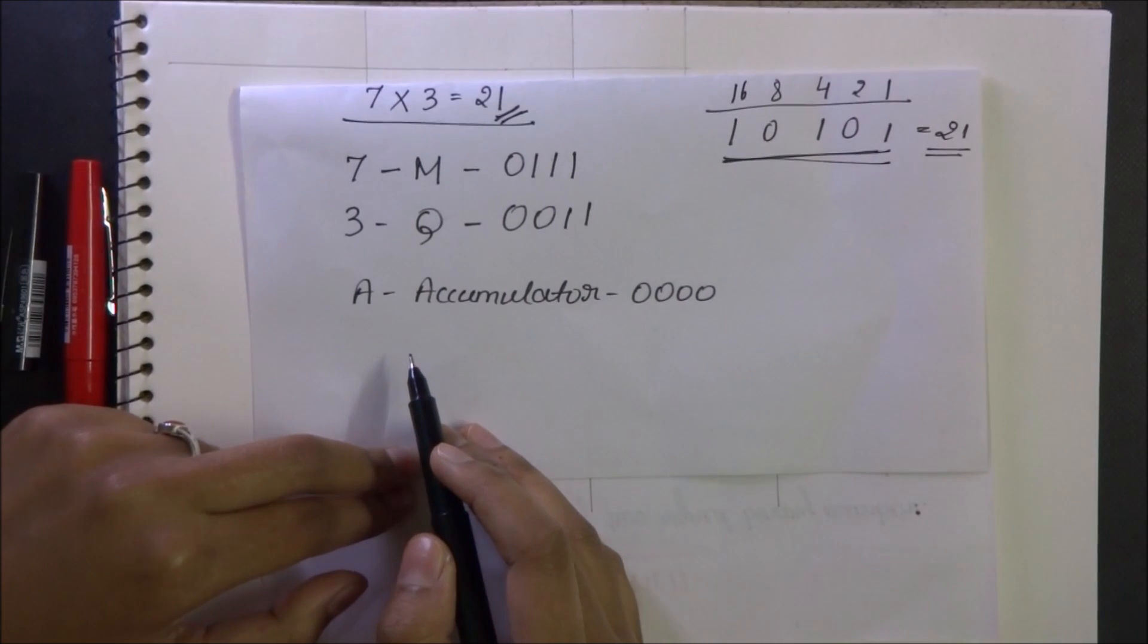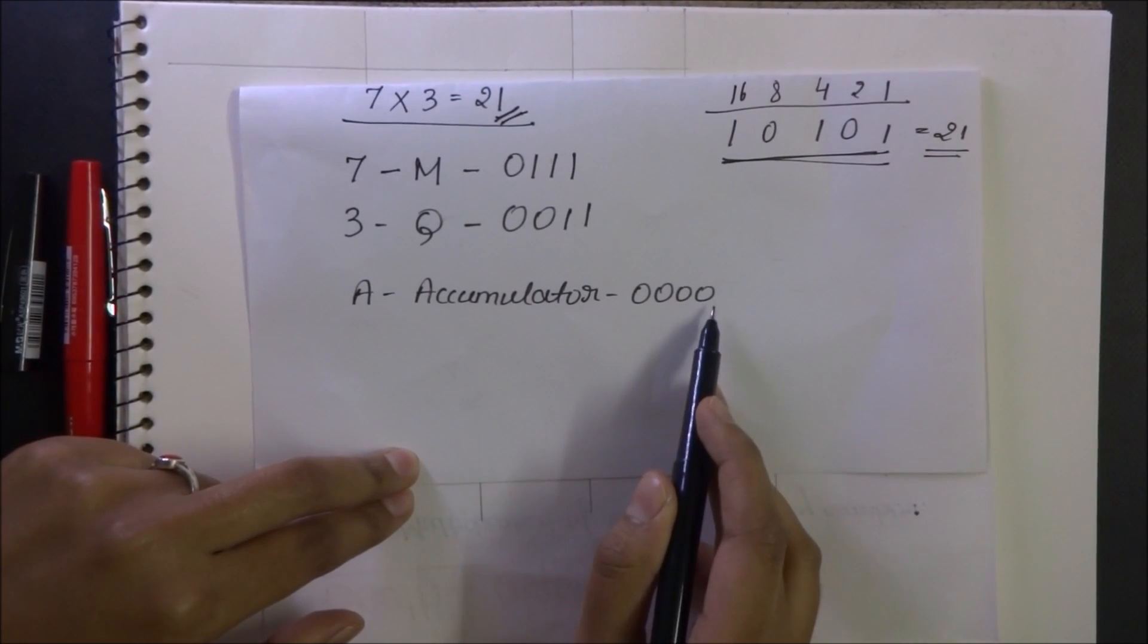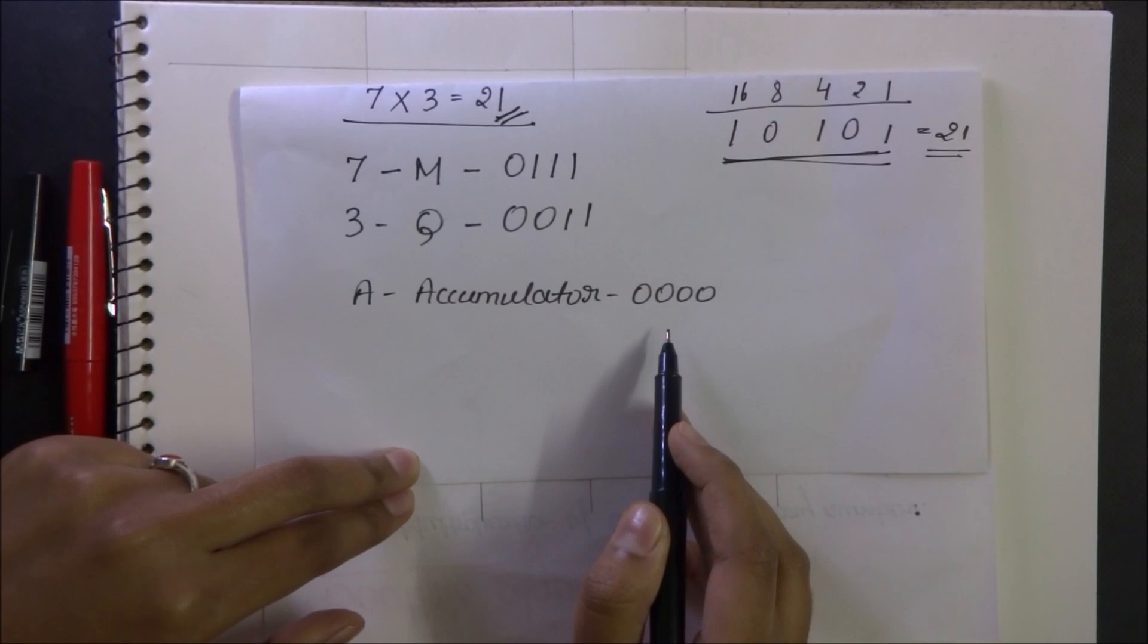A stands for accumulator, whose initial value is 0-0-0-0. It keeps changing after each step. Let's start off with the steps.